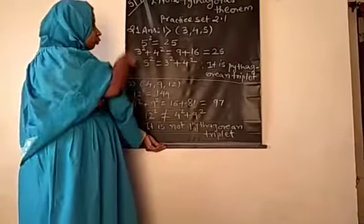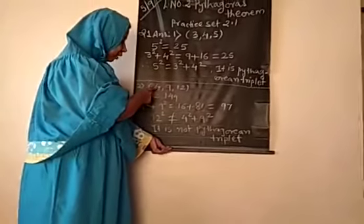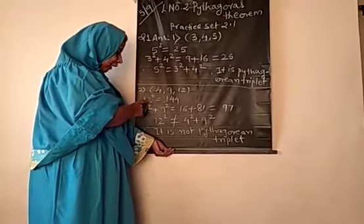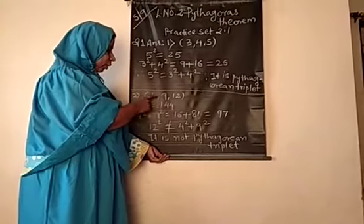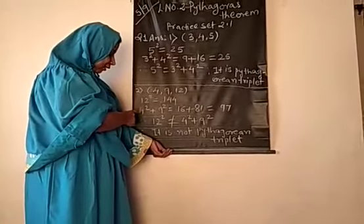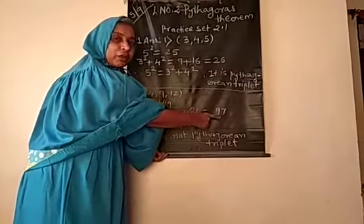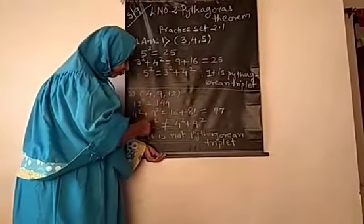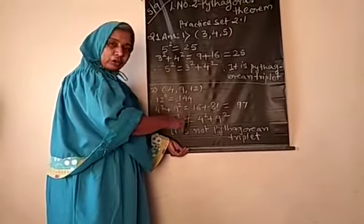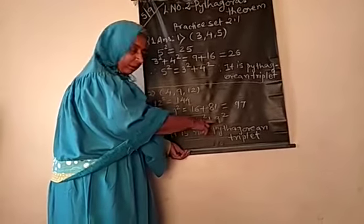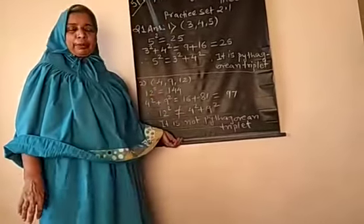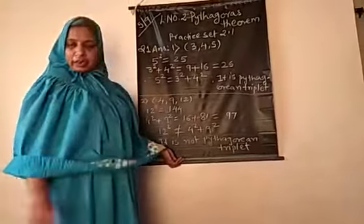The second sub-question from question number 1 has the 3 numbers 4, 9, and 12. Out of these, 12 is the largest number, so 12 squared equals 144. The remaining 2 numbers are 4 and 9, so the sum of their squares is 4 squared plus 9 squared, which equals 16 plus 81, totaling 97. Since 144 and 97 are not equal, 12 squared is not equal to 4 squared plus 9 squared — LHS and RHS are not equal, so these numbers are not a Pythagorean triplet.